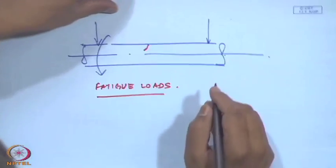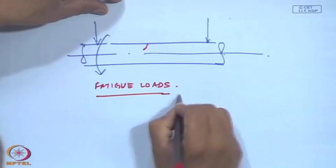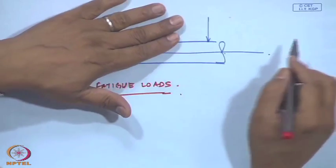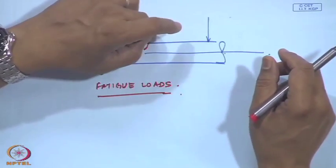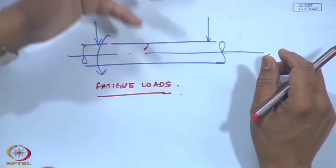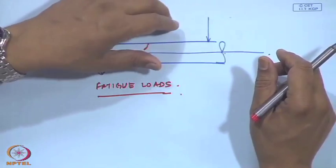A material subjected to fatigue loads is going to fail much more quickly compared to a static load. Every time the shaft rotates, the crack is going to open and close repeatedly, and because of fatigue loading it is going to fail much more quickly. In this class we are going to focus on such cracks on shafts which are visible from the outside.